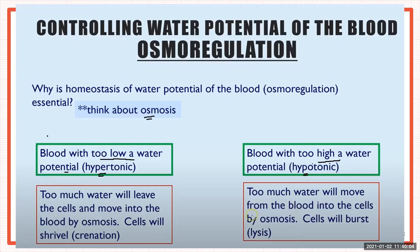In the first condition, imagine a cell where the blood outside has a higher concentration of solutes compared to water — the blood is hypertonic. Water flows from high to low water potential, so too much water will leave the cells and move into the blood by osmosis. The cells will actually shrivel; their size becomes small, and this process is known as plasmolysis.